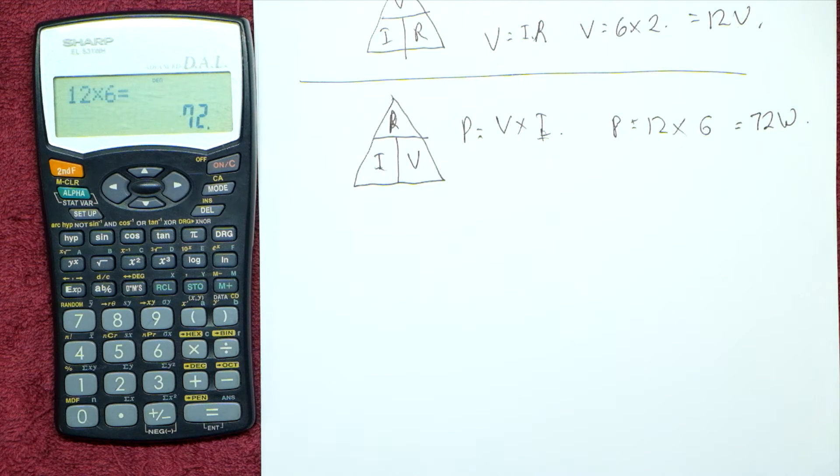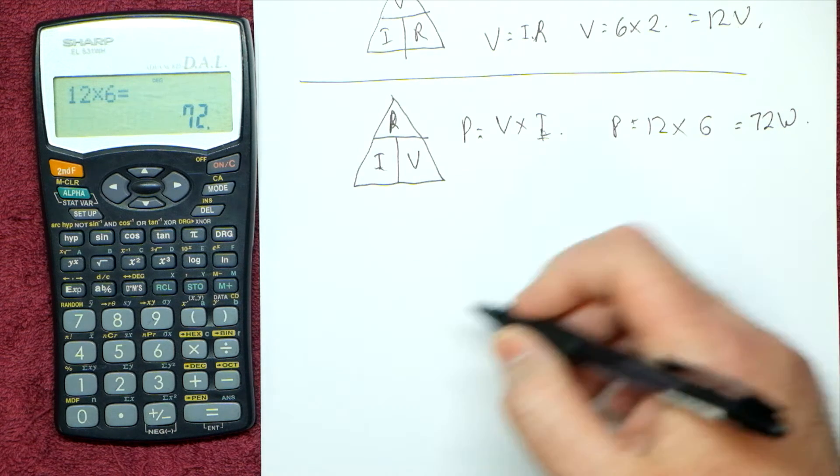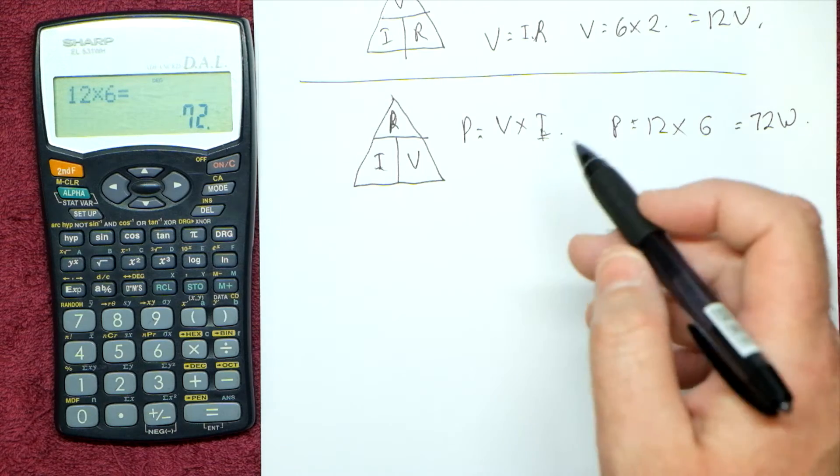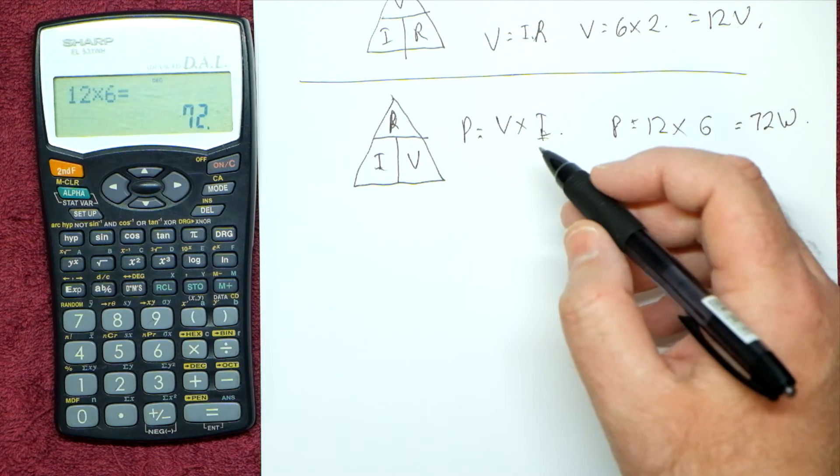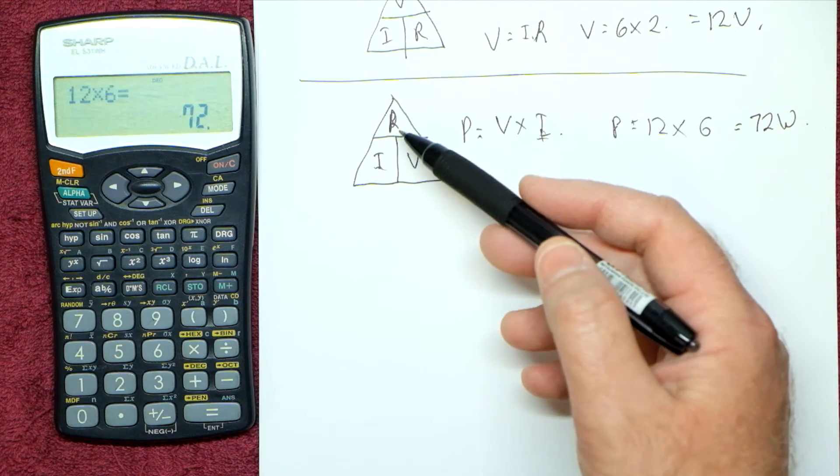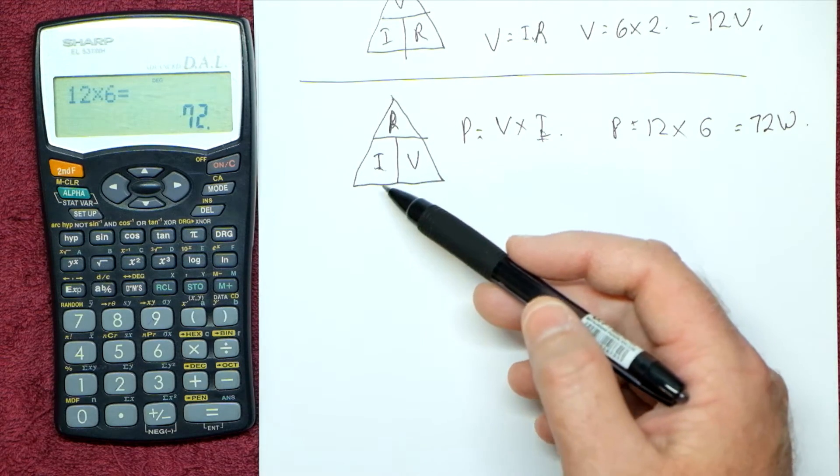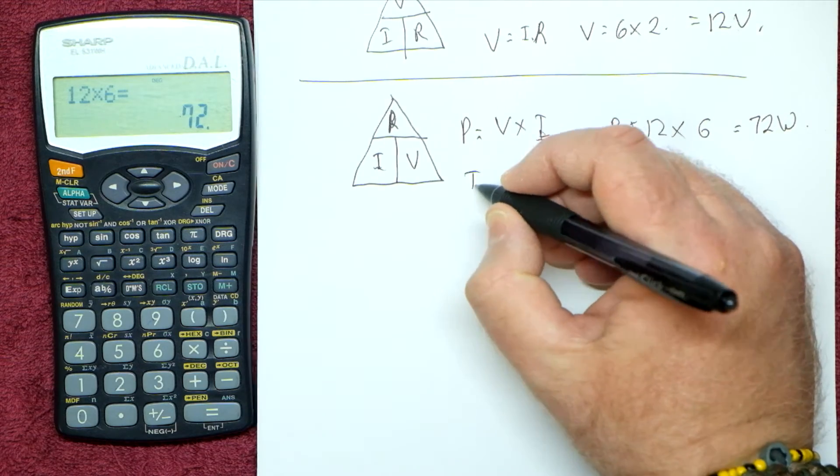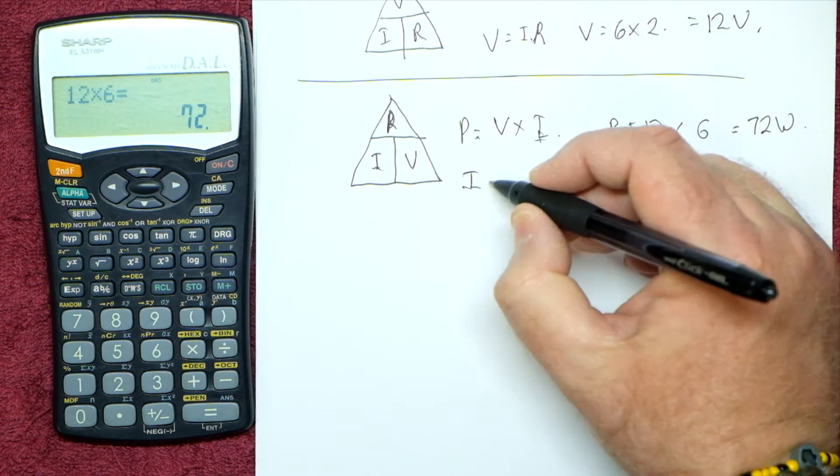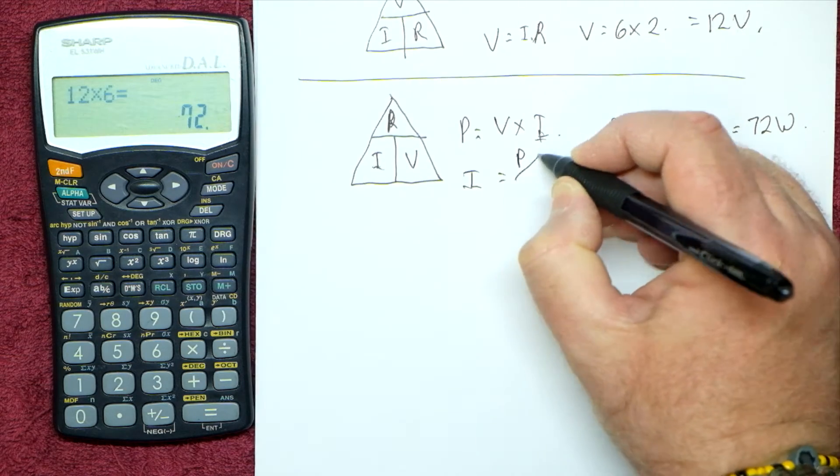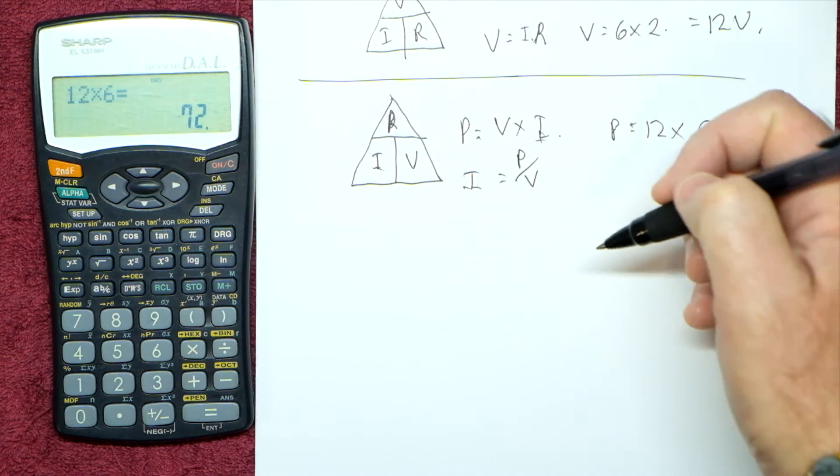If you know, for example, if you've got a light bulb, a 100 watt light bulb, you want to work out what the current flow through the light bulb is. We know it's 100 watts, we know what the voltage is, 230 volts. So I equals P over V, P divided by V.